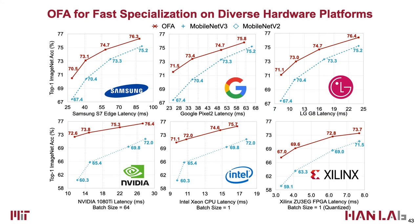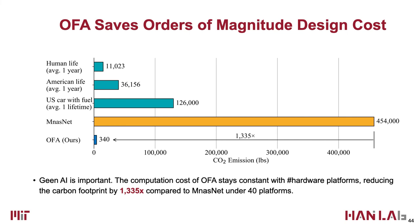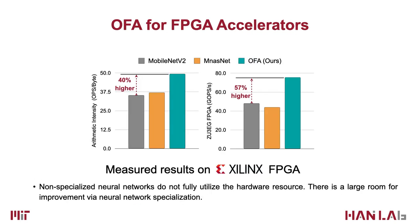More importantly, Once-for-All enables fast specialization across many devices under a wide spectrum of latency constraints, including CPU, GPU, mobile, DSP, and FPGA. It consistently outperforms MobileNetV3 on all scenarios. The design cost of Once-for-All stays constant with respect to the number of hardware platforms, reducing the total cost by more than 1,000 times compared to MNASNet across 40 platforms. Once-for-All not only works on general-purpose hardware but also on specialized deep learning accelerators. On FPGA, Once-for-All improves arithmetic intensity by 40% and GOPs per second by 57% compared with MobileNetV2.